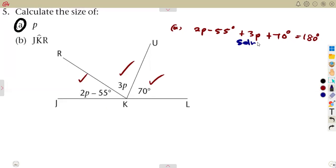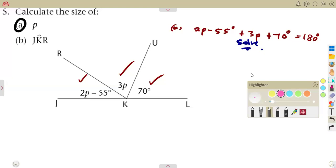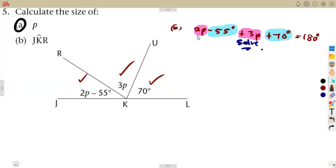So considering the part of p in this case, these are like terms: the 2p and the 3p. These are like terms. Also, considering the constants, the angles, these are like terms that you are going to collect and simplify.